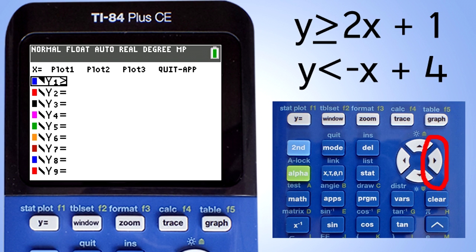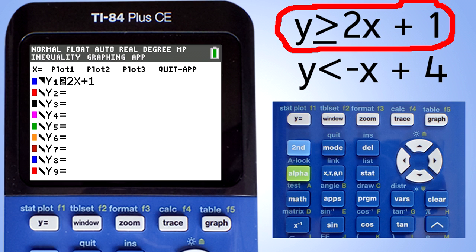Now press the right arrow key twice so that we can enter the first equation. The black square cursor should be here. Time to enter the first equation. In this case it is 2x plus 1. Remember, the x key is located here.